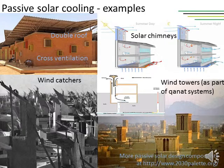We can use passive solar design principles to cool the building too. This can be cross ventilation in more temperate climates. In hotter climates, we need a double roof — like in this health center in Burkina Faso by Kéré Architecture — or even more complex systems like solar chimneys, like this French school in Syria. These systems can become even more elaborate, like wind catchers in vernacular architecture in Hyderabad Sind in Pakistan, or wind towers like in this picture from Yazd in Iran, where the wind towers are part of Qanat systems — water supply systems that cool the building down.